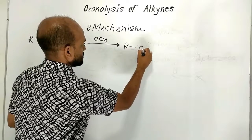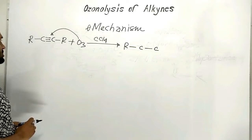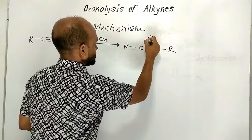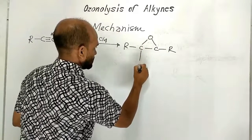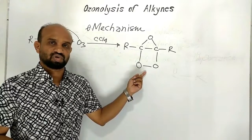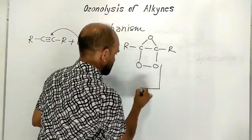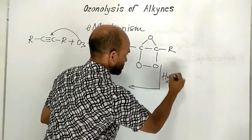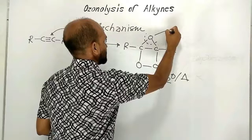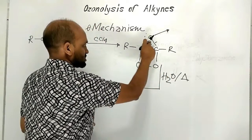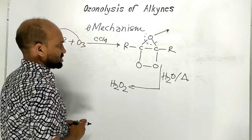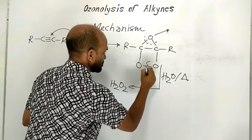The alkyl group and both triple-bonded carbons react with ozone such that the triple bond converts to a single bond, and the three oxygen atoms of ozone are added across the two carbons. This forms an ozonoid additive compound. When this compound is hydrolyzed with warm water, one oxygen moves away and combines with water to form hydrogen peroxide. At the same time, the oxygen bond breaks.